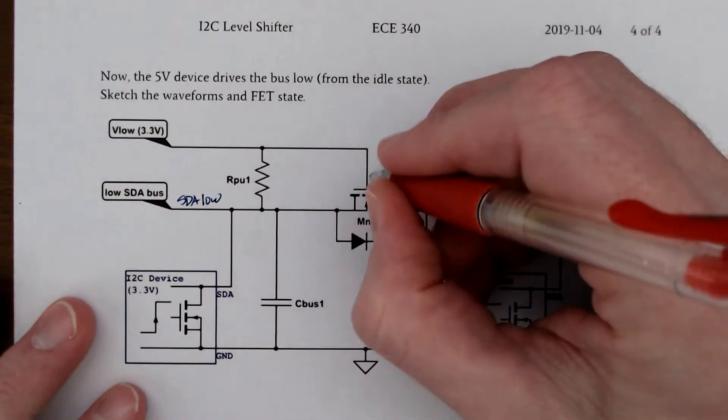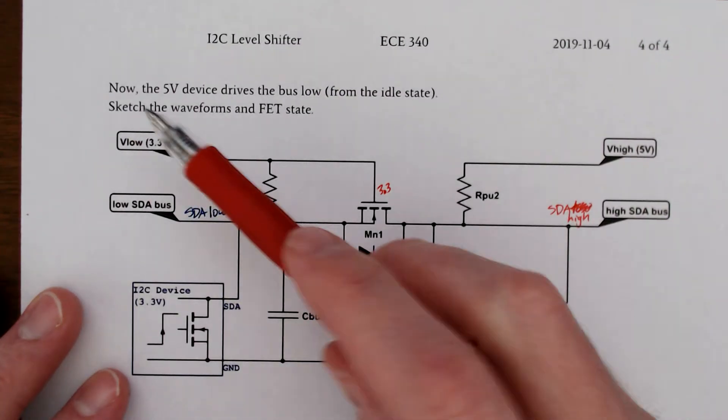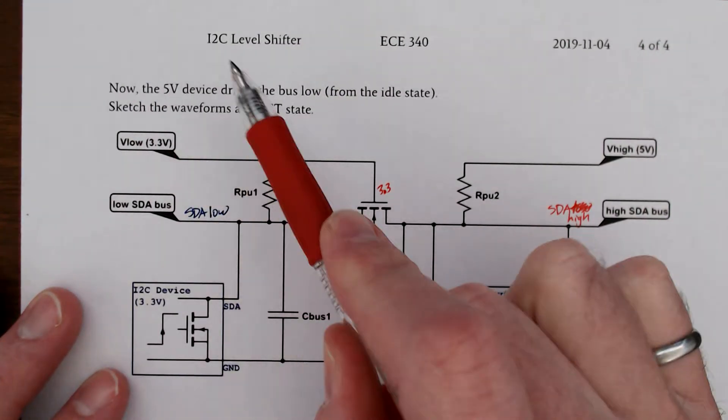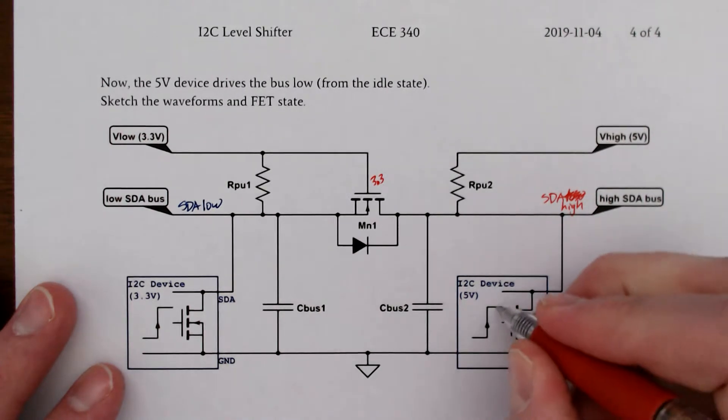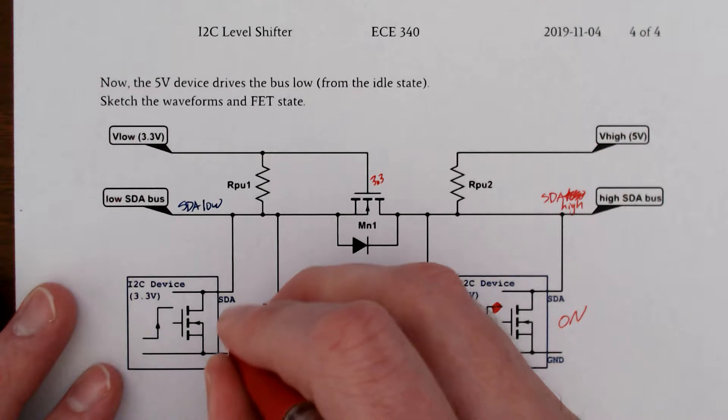Remember, this is still 3.3 volts. It's always 3.3 volts. Our initial condition is we're still in the idle state, but now it's this device that turns on. This is on. This is still off.